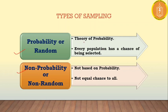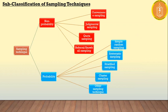In probability sampling, according to the theory of probability, every unit in the population has an equal chance of being selected. In non-probability sampling, there is biasness — not all units have equal chance. Here there is a biased selection of samples, whereas in probability sampling all units have equal chance.